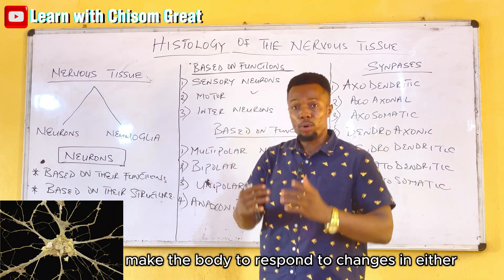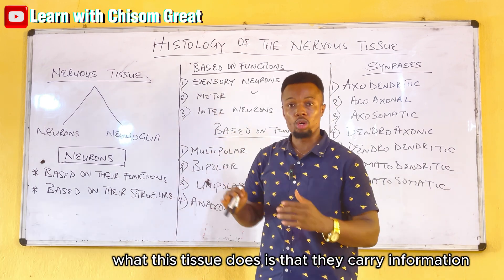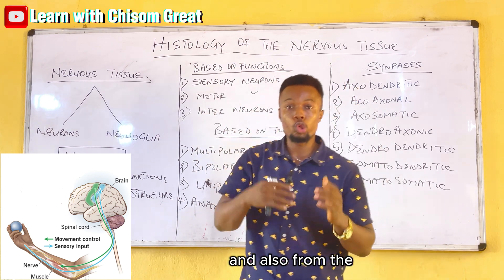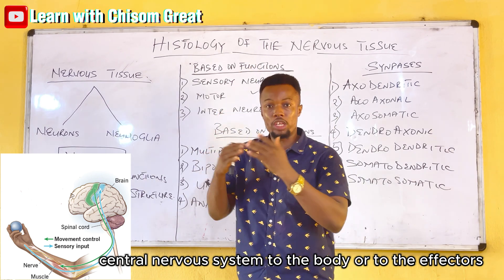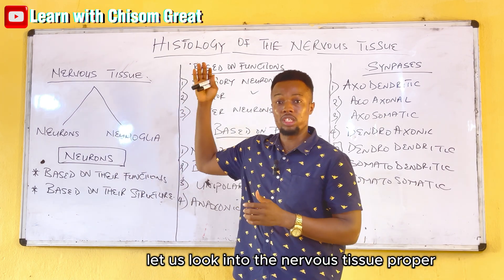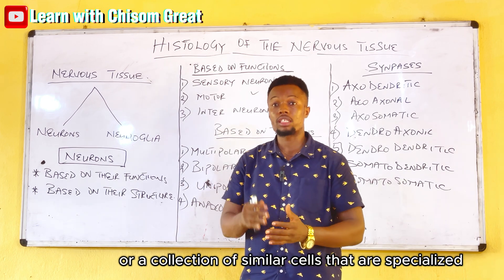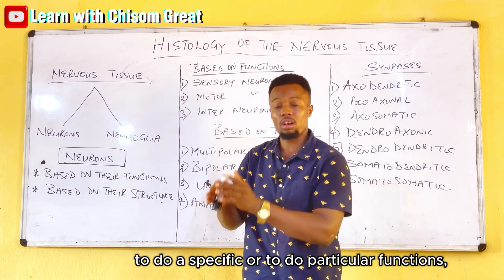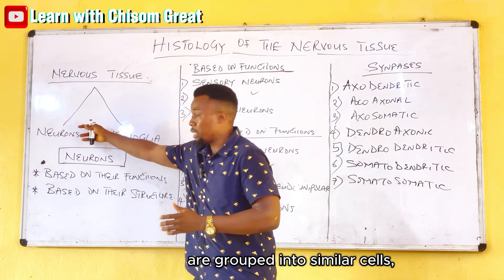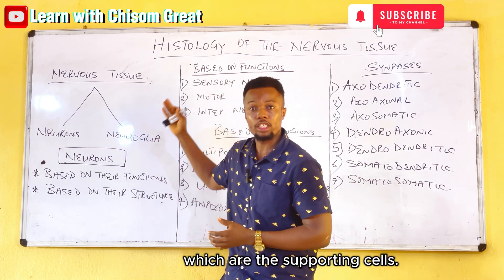The nervous tissue makes the body respond to changes in either the internal or external environment. What this tissue does is carry information from the receptors to the central nervous system and also from the central nervous system to the body or to the effectors. Tissues are defined as a group or collection of similar cells that are specialized to do specific or particular functions. The nervous tissue is grouped into the neurons, which are the functional units, and the neuroglia, which are the supporting cells.